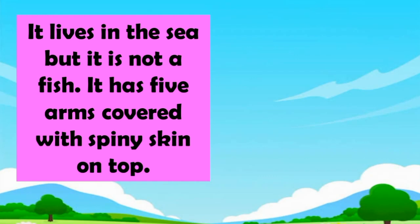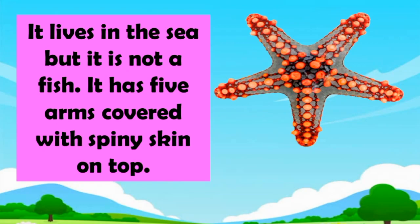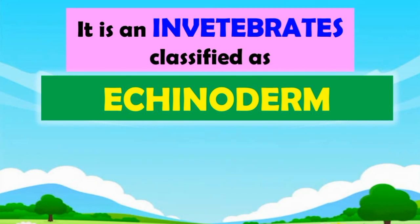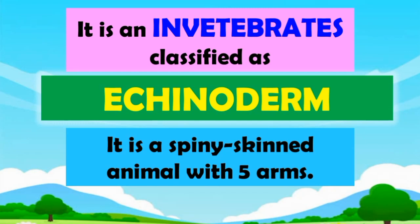Guess what? It lives in the sea, but it is not a fish. It has five arms covered with spiny skin on top. What is it? A starfish! Correct! Starfish is an invertebrate classified as echinoderm. It is a spiny-skinned animal with five arms.